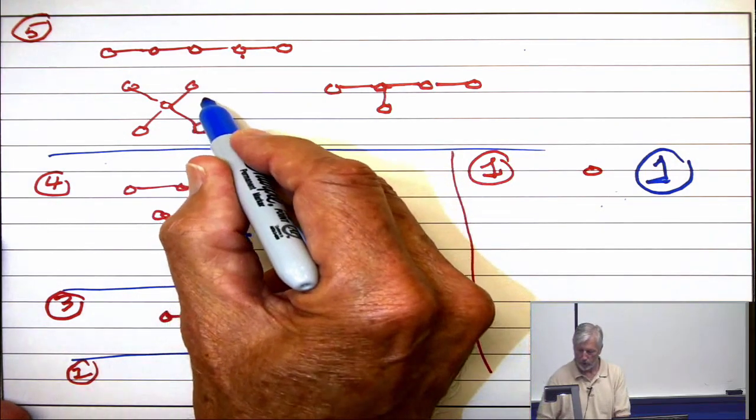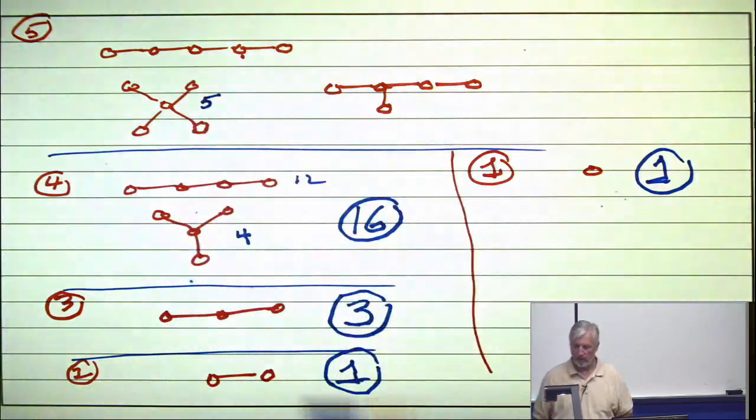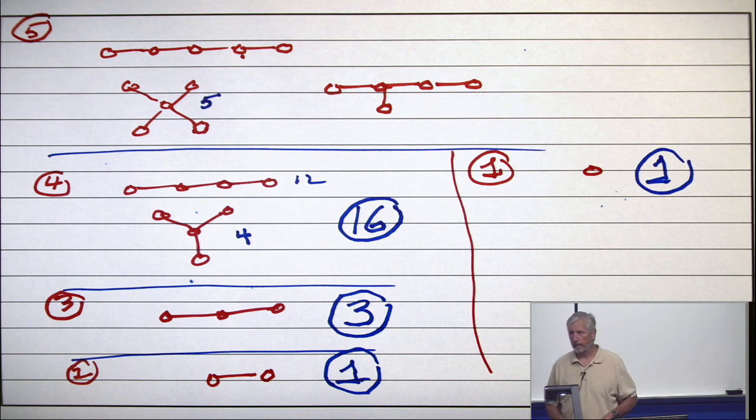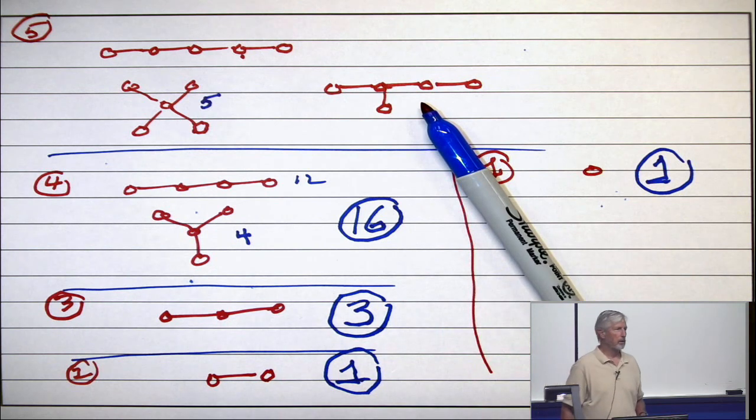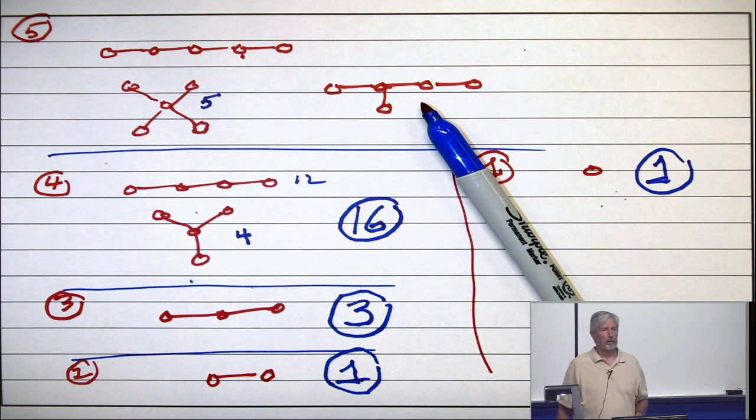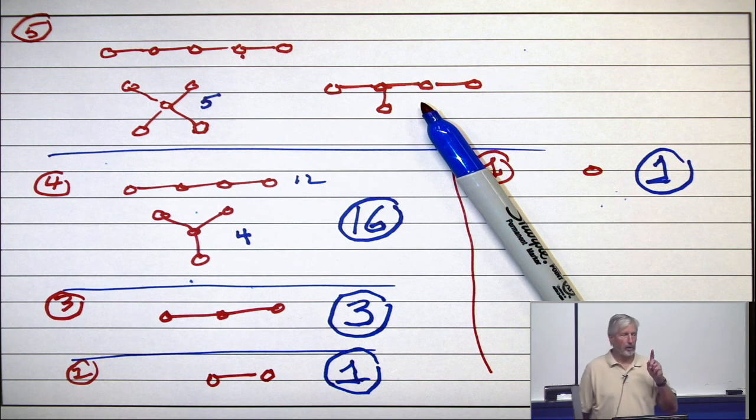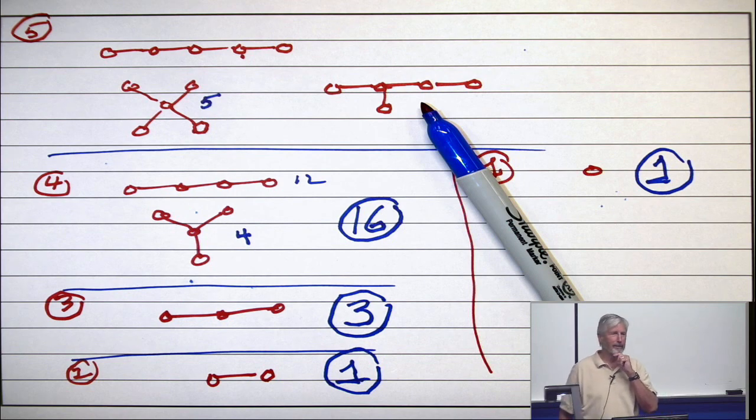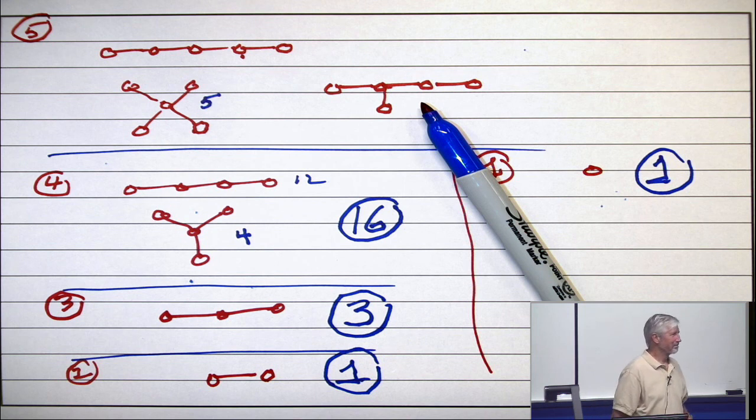Five. Because what you're really doing is choosing the one that goes in the middle. What about this one? Sorry. This one. I think it's a little bigger than that. It's not 1,000. Sixty.